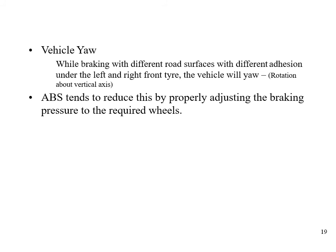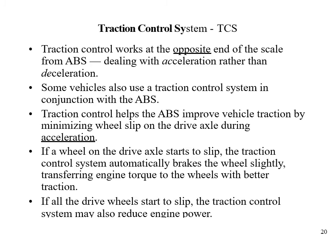By properly adjusting brake pressure at individual wheels as required, ABS controls this yaw behavior. Traction control system (TCS) is another part of the ABS system — it works on the opposite end of the scale, dealing with acceleration rather than deceleration. Some vehicles also use TCS in conjunction with ABS. TCS helps improve vehicle traction by minimizing wheel slip on the drive axle during acceleration. If a wheel on the drive axle starts to slip, the traction control system automatically brakes that wheel slightly, transferring engine torque to the wheel with better traction.